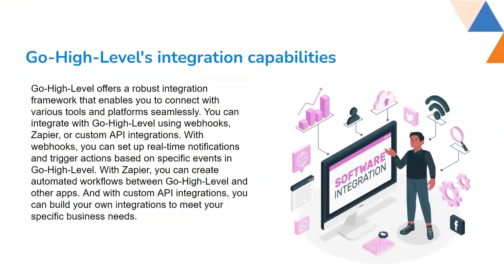GoHighLevel offers a robust integration framework that enables you to connect with various tools and platforms seamlessly. You can integrate with GoHighLevel using Webhooks, Zapier, or custom API integrations. With Webhooks, you can set up real-time notifications and trigger actions based on specific events in GoHighLevel. With Zapier, you can create automated workflows between GoHighLevel and other apps. And with custom API integration, you can build your own integrations to meet your specific business needs.